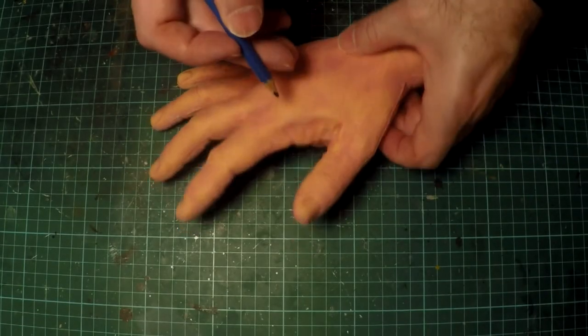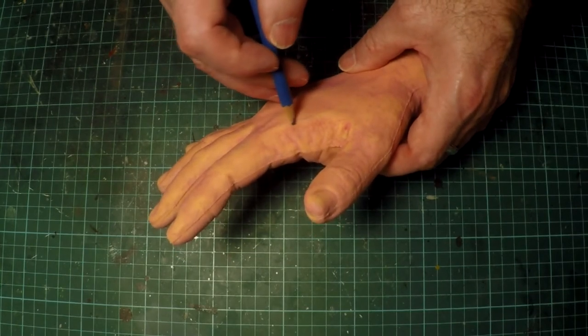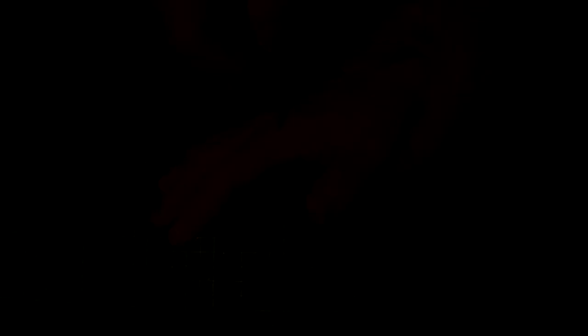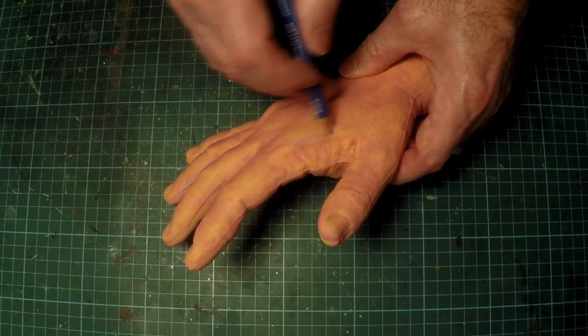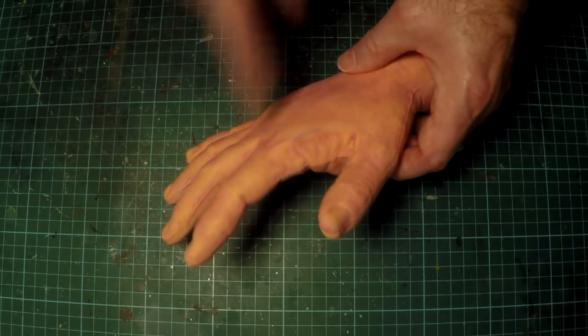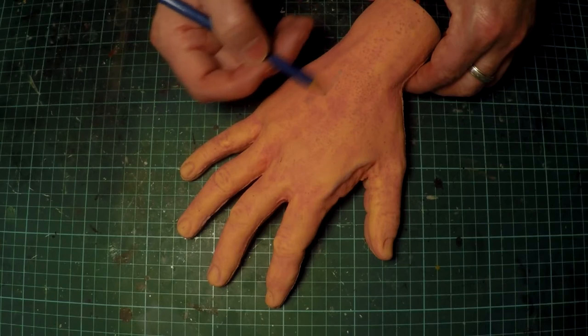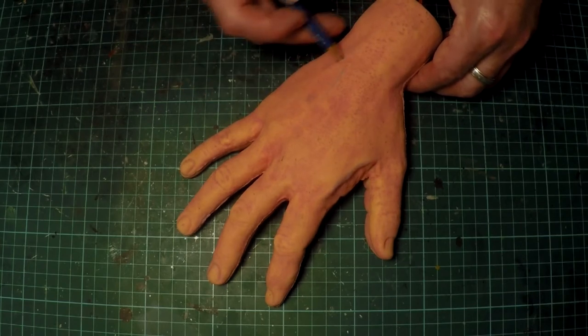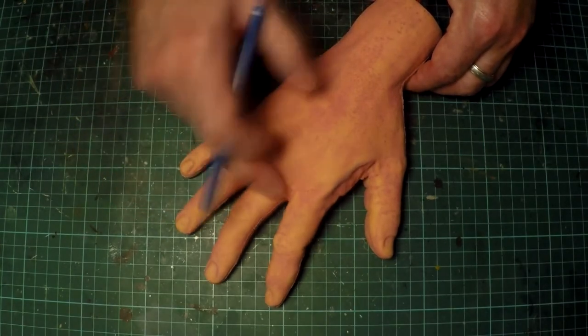To accentuate the veins that are apparent on the hand, I'm just using a blue Staedtler Mars Lumicron. It's a very subtle effect on the skin. Obviously, veins are supposed to look like they're under the skin, so I don't want to make it too obvious. I'm just lightly penciling it on, and then blending it with my finger, rubbing it back a little bit. This is a subtle process, but it all adds to the realism.